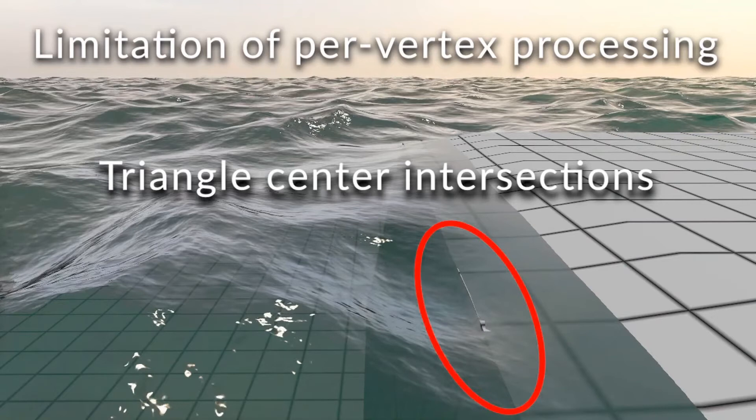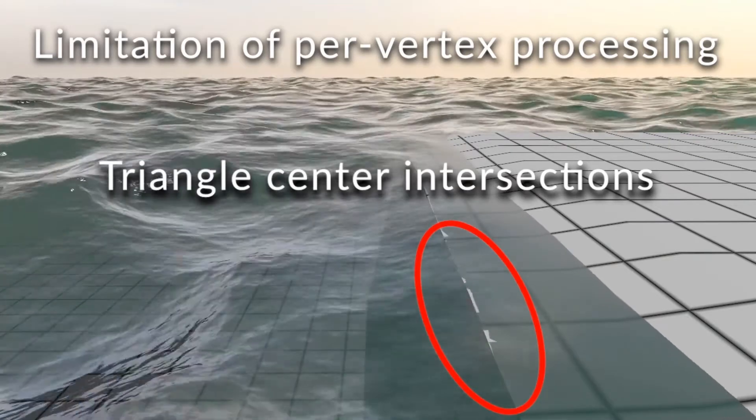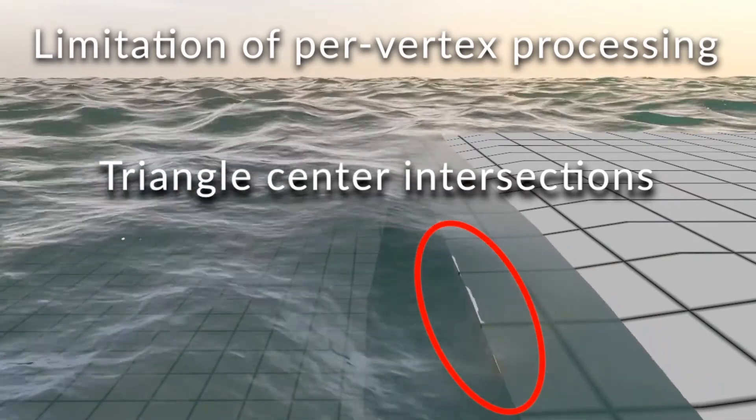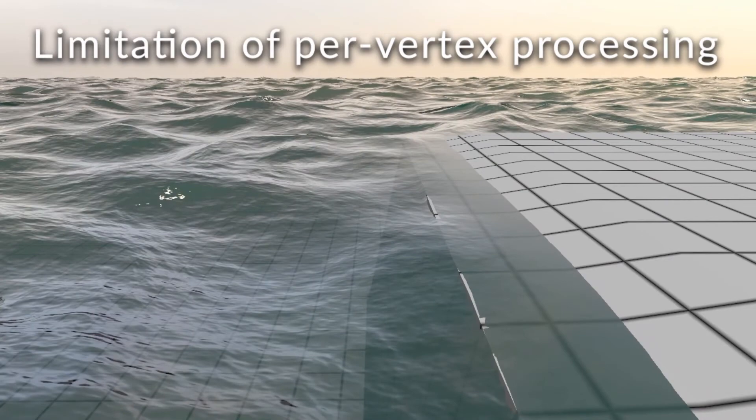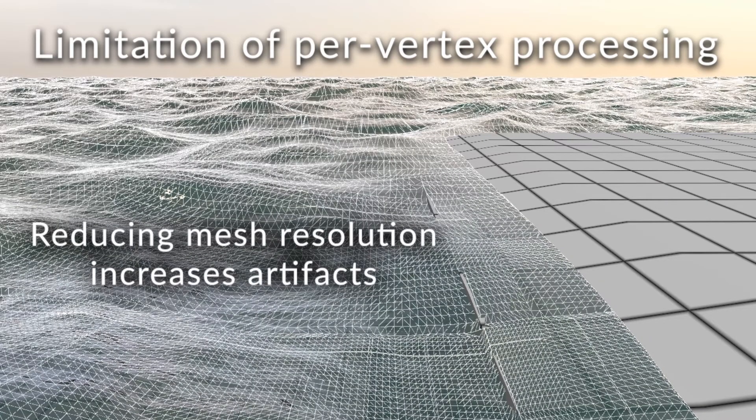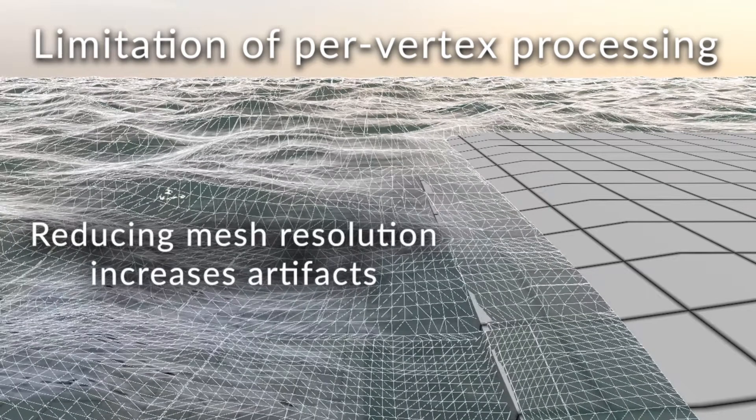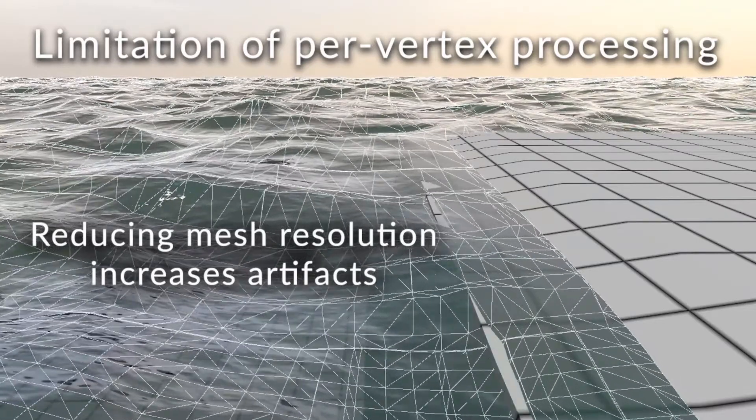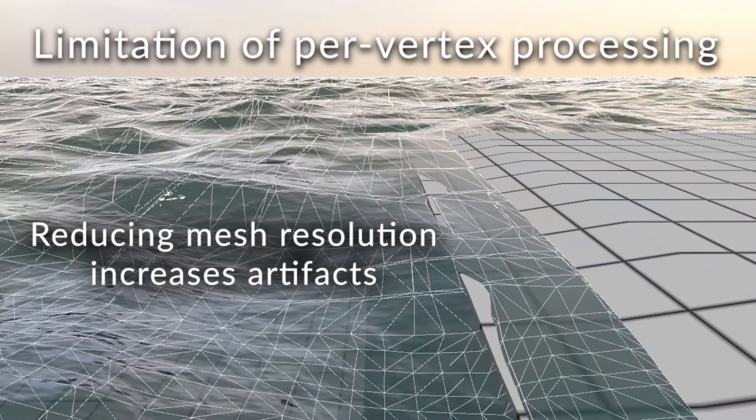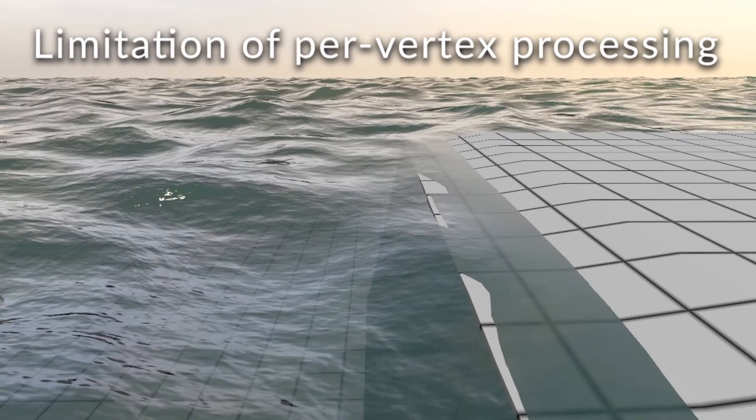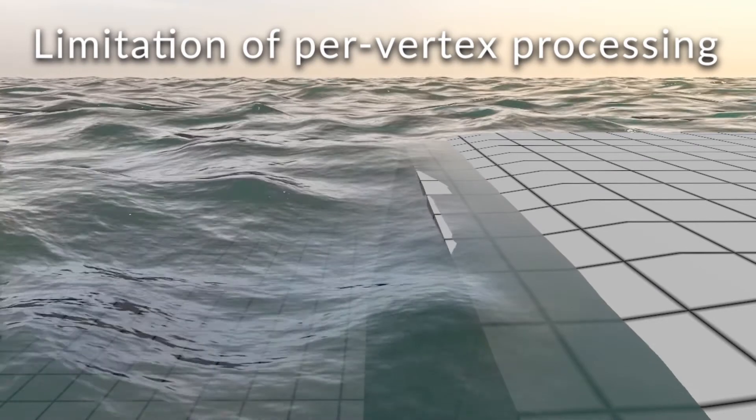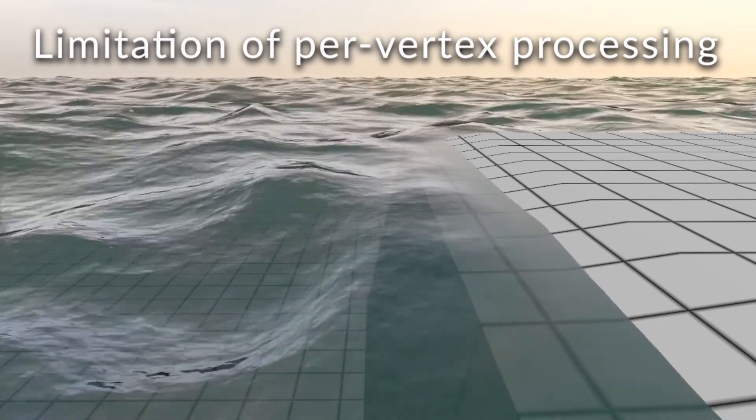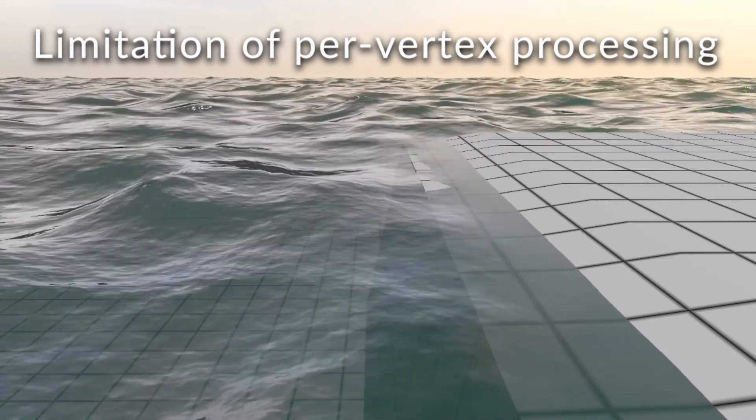Finally, an issue is caused by the fact that we only process vertices of the water mesh. This means triangle centers can still intersect with the terrain, as shown here. If we make the triangles larger by reducing the mesh resolution, the problem becomes slightly worse. A possible solution would be to bias the z-buffer in favor of the water mesh, so that it gets always drawn on top of the terrain. We leave this as future work.